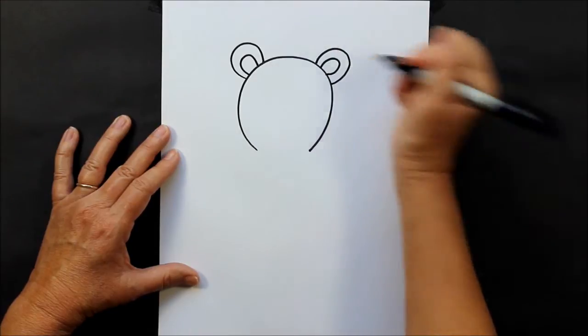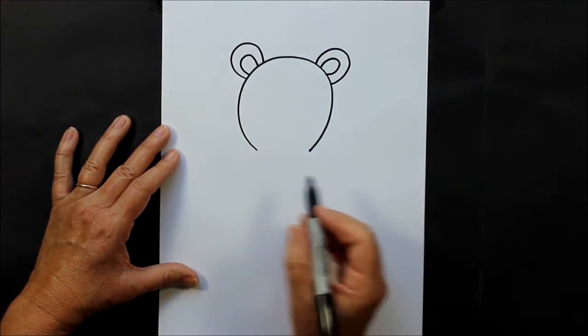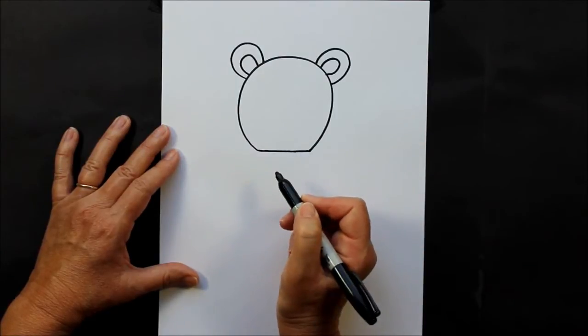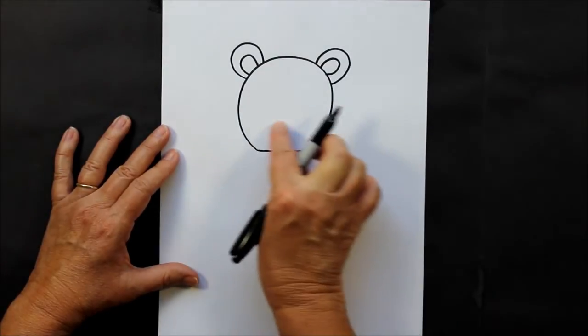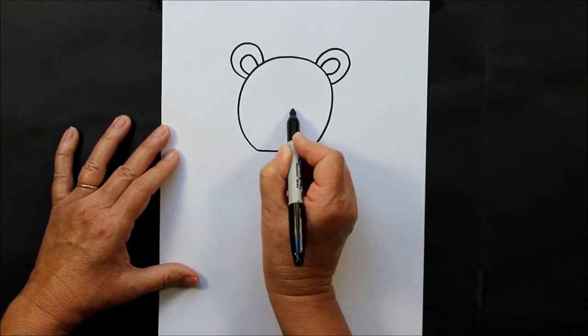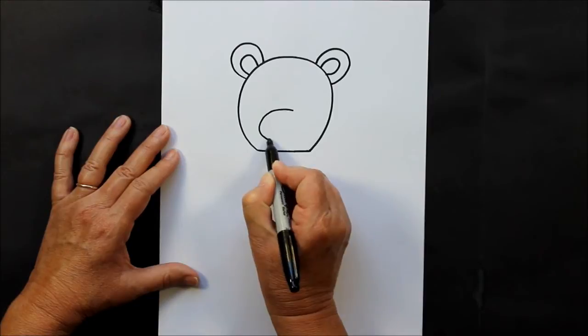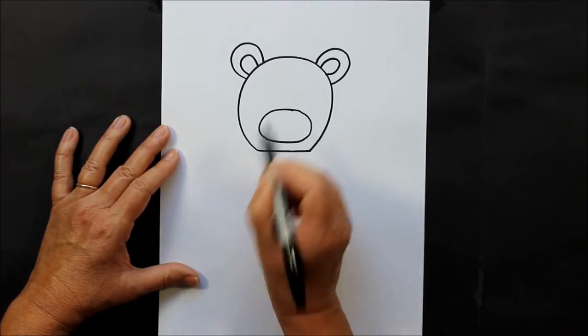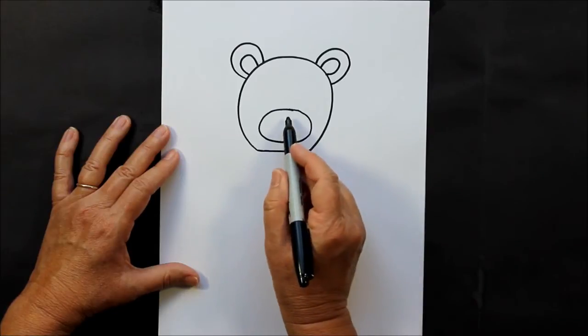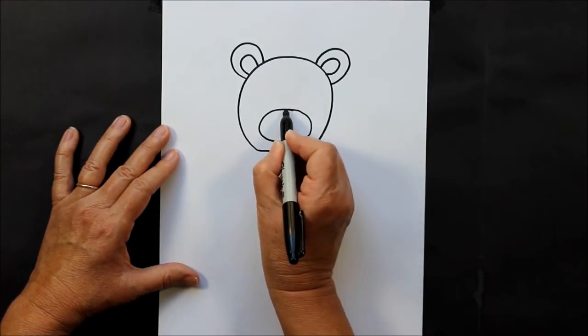Now we're going to close up the bottom of your C and we're going to work on the face here. So for your bear, towards the lower part of your bear's face, you're going to make an oval. This is going to be his nose and his mouth area.